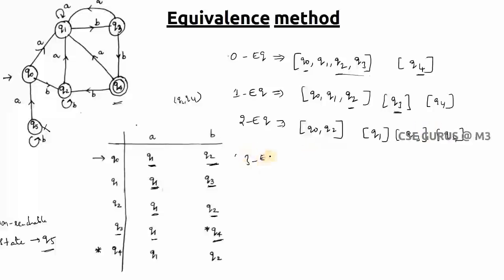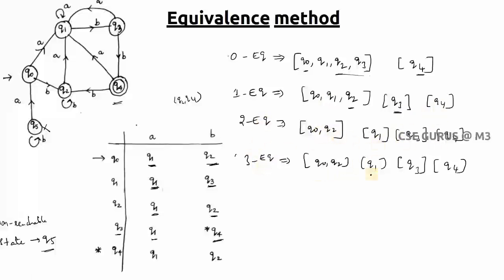For three-equivalence, only q0 and q2 need to be checked since q1, q3, and q4 are already separate. q0→a = q1, q2→a = q1 — same. q0→b = q2, q2→b = q2 — same. So q0 and q2 remain in the same group. We stop here because the two-equivalence and three-equivalence partitions are identical.